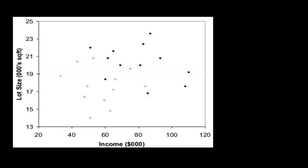Since we have two dimensions in this example, it is easy to look at this on a chart. What we have done here is plot a scatter plot of income and lot size. All 24 cases are actually plotted here. The dark dots indicate owners, and the light dots indicate non-owners. You can clearly see that there is a predominant trend for the dark dots to be to the right and to the top, indicating higher income and higher lot sizes.